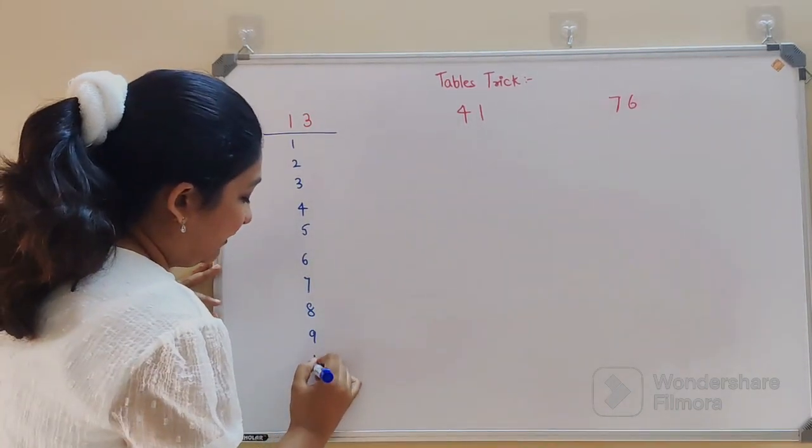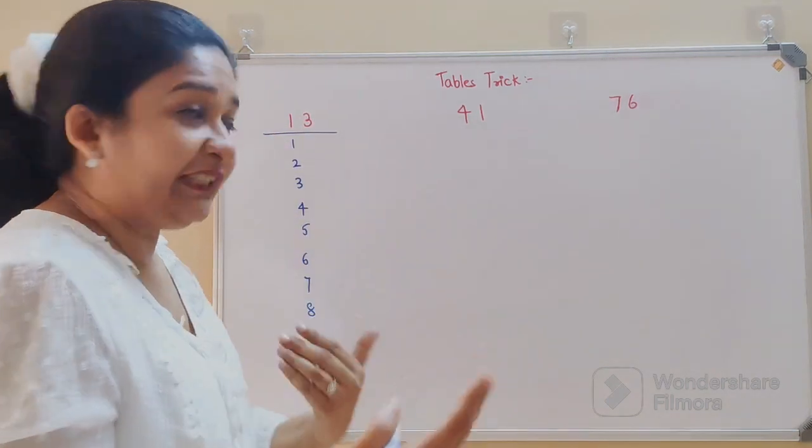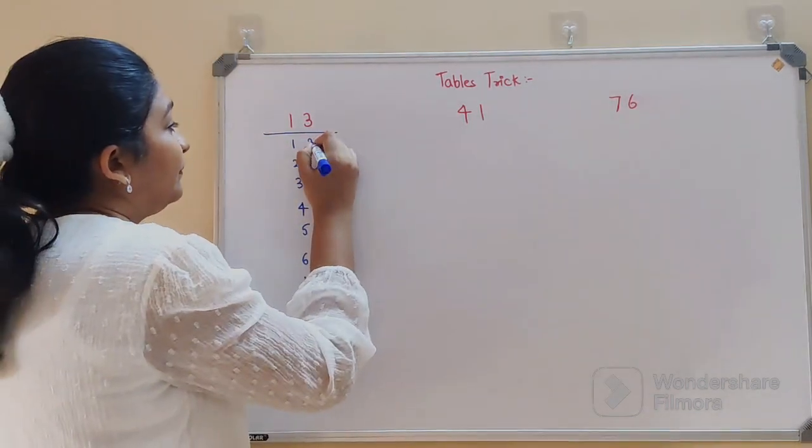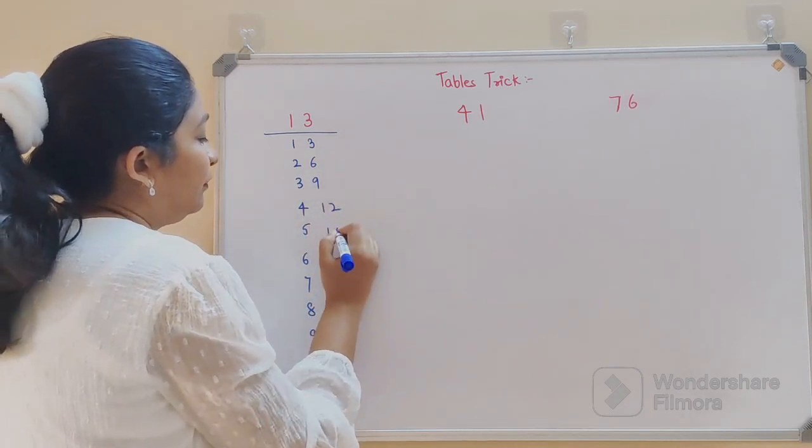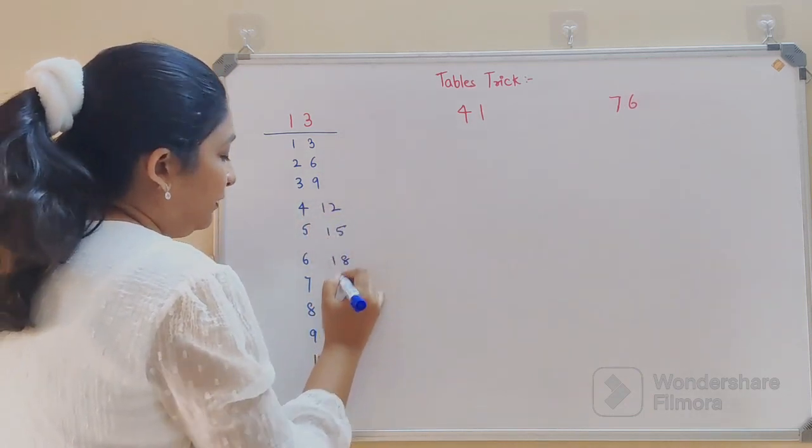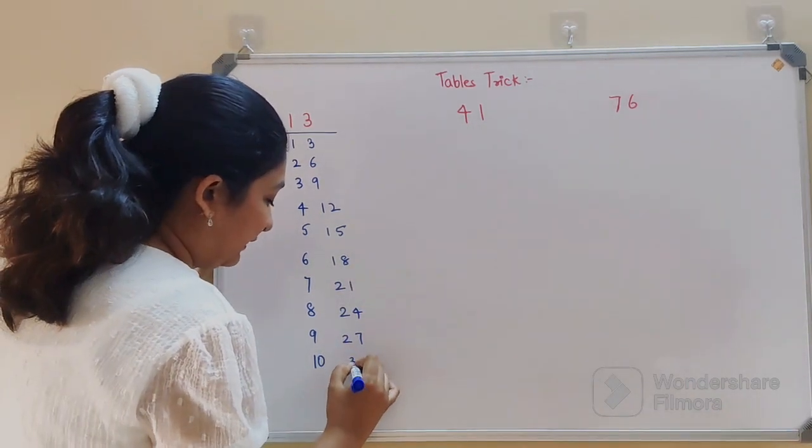Then we'll write down table of 3, which is 3, 6, 9, 12, 15, 18, 21, 24, 27, and 30.